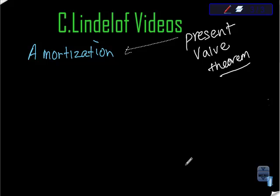Okay, C. Lindelof videos. In the last video, we were talking about present value theorem, and the other way that present value theorem can be used is in something called amortization. The word morte comes from the word death, so to amortize means to kill a loan. How long will it take me to bring the total death of the loan that I've taken out?